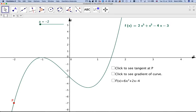Right, in this video we're going to look at what we mean by the gradient of a curve. So I've got a curve here. The curve I've got is f of x is 2x cubed plus x squared minus 4x minus 3.